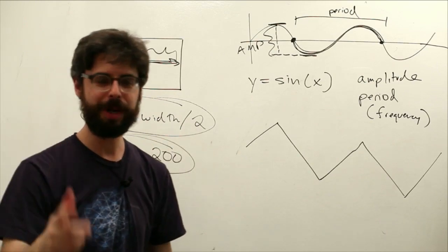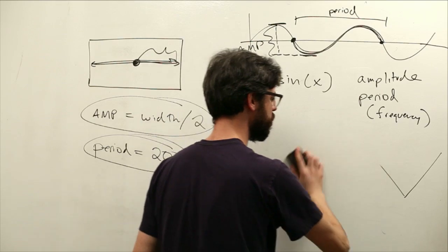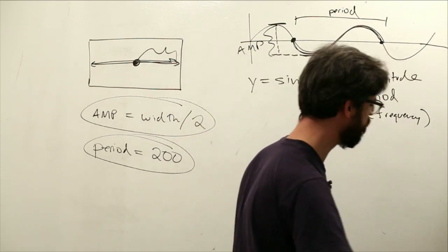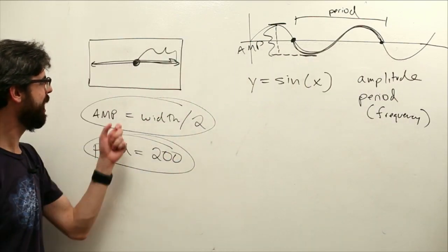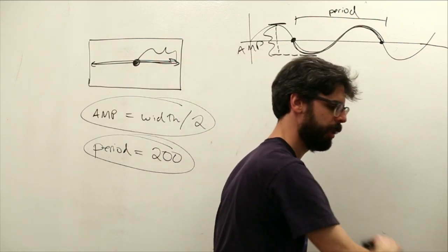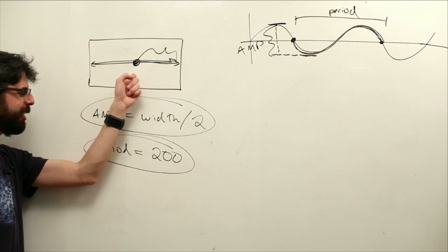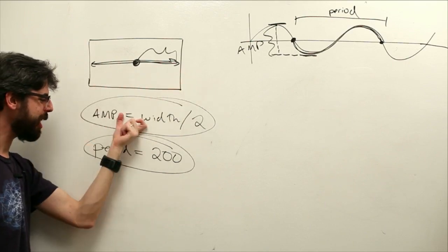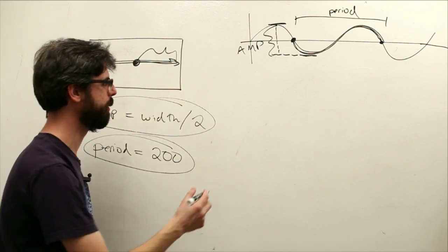So now what we need is a formula. We need to say if we are trying to get the x location oscillating with this amplitude in this period, how do we do that?